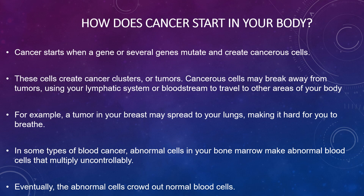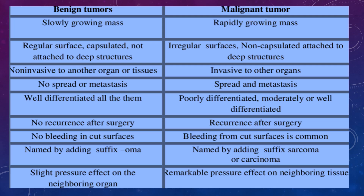Some types of blood cancer involve abnormal cells in your bone marrow making abnormal blood cells that multiply uncontrollably. Eventually, the abnormal cells crowd out the normal blood cells. There is a table here describing the differences between benign tumors and malignant tumors.